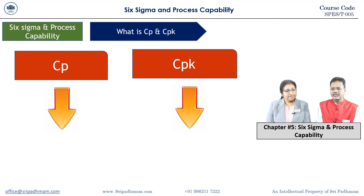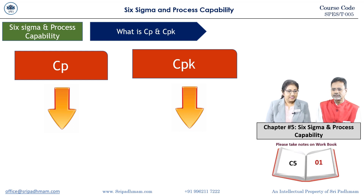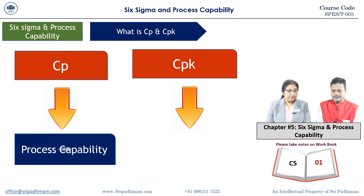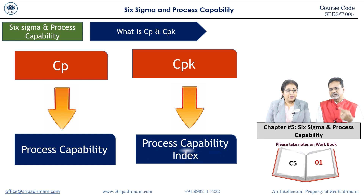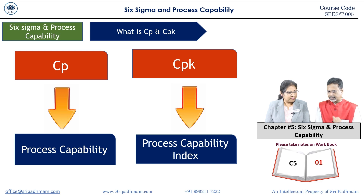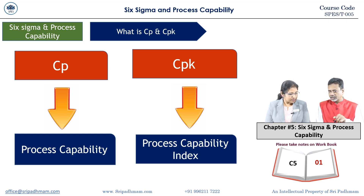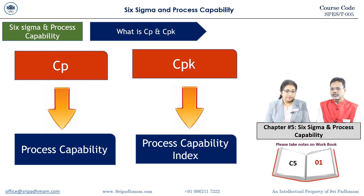Now learn the CP-CPK difference. CP is process capability — it measures the capability of the process under six sigma using the tolerance range. CPK is process capability index — it accounts for process centering. If the process is off-center, CPK differs from CP.